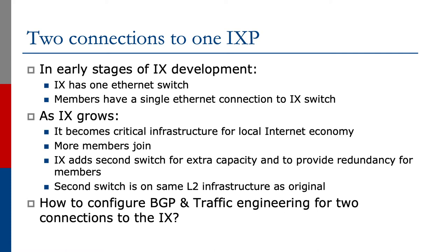The next example we're going to look at is where the network operator has two connections to one internet exchange point. In the previous multi-homing examples we demonstrated just a single router connecting to the IX LAN. But as the IX grows, it becomes critical infrastructure for the local internet economy. More members join it, more traffic flows across the IX, and maybe the ethernet switch either runs out of capacity or the members are requesting that the IX provides redundancy. This second ethernet switch would be on the same layer 2 infrastructure as the original switch.